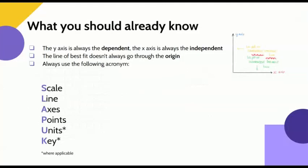Also, remember that the line of best fit does not always go through the origin, i.e. 0,0. And to always use this acronym when plotting a graph, that's SLAP-UK. It's scale, line, axes correctly, points, units correctly labelled, and the key where applicable.